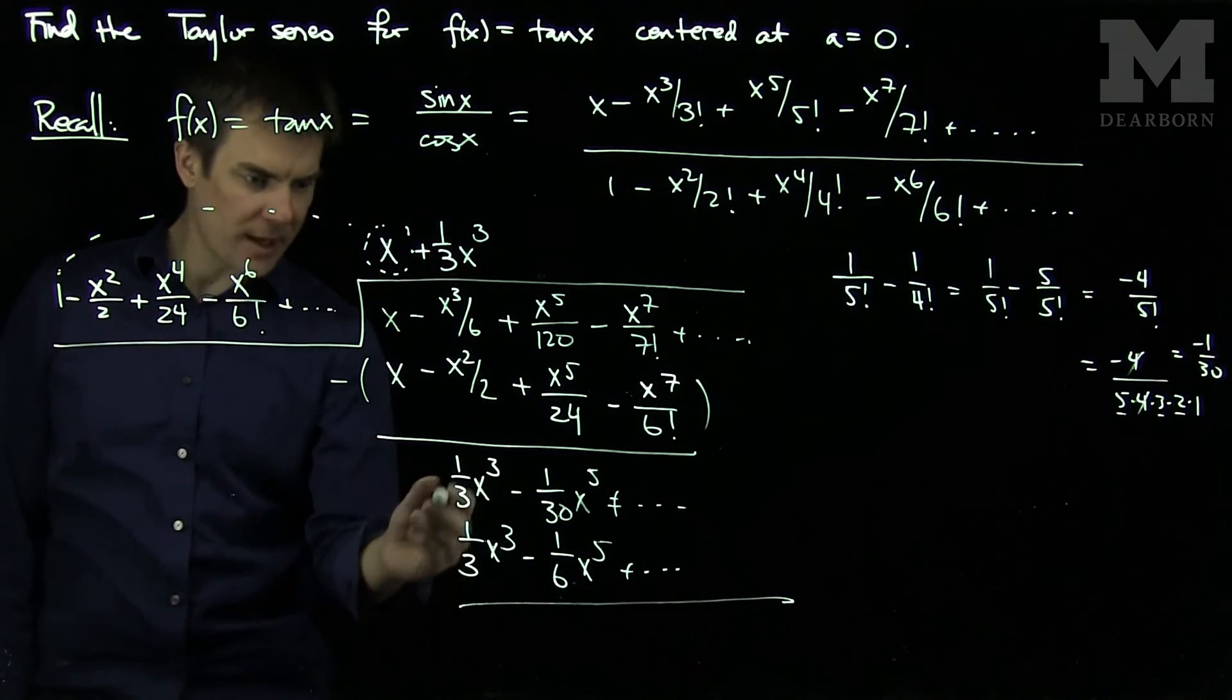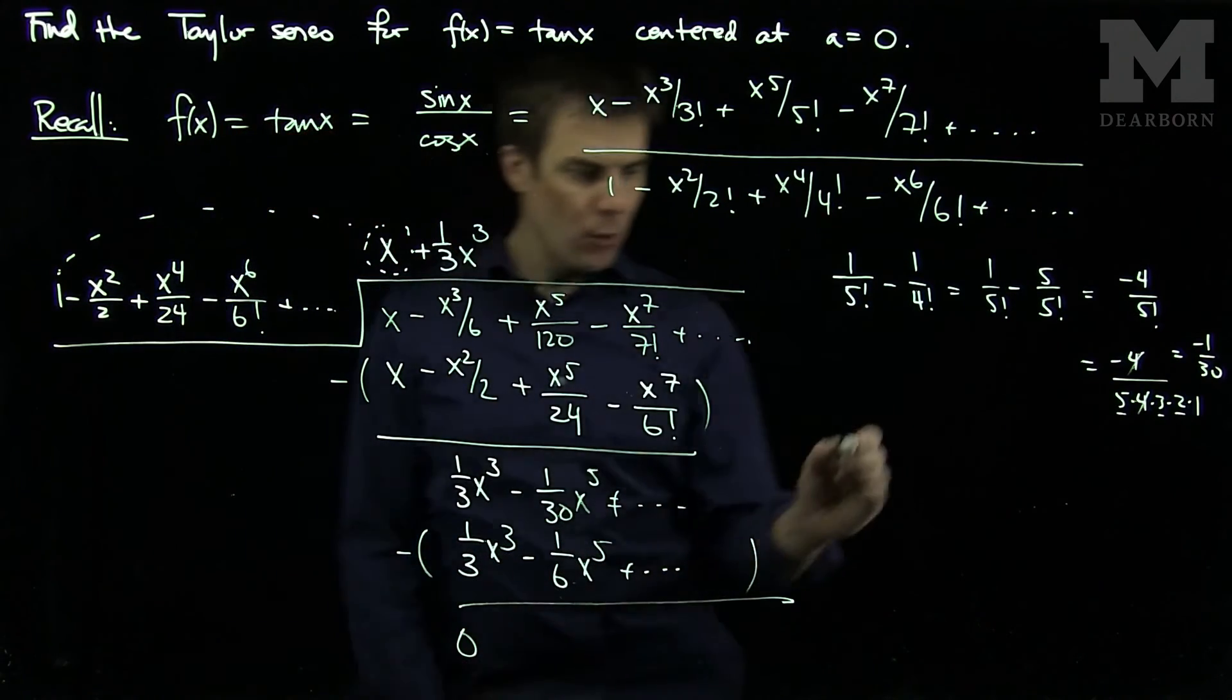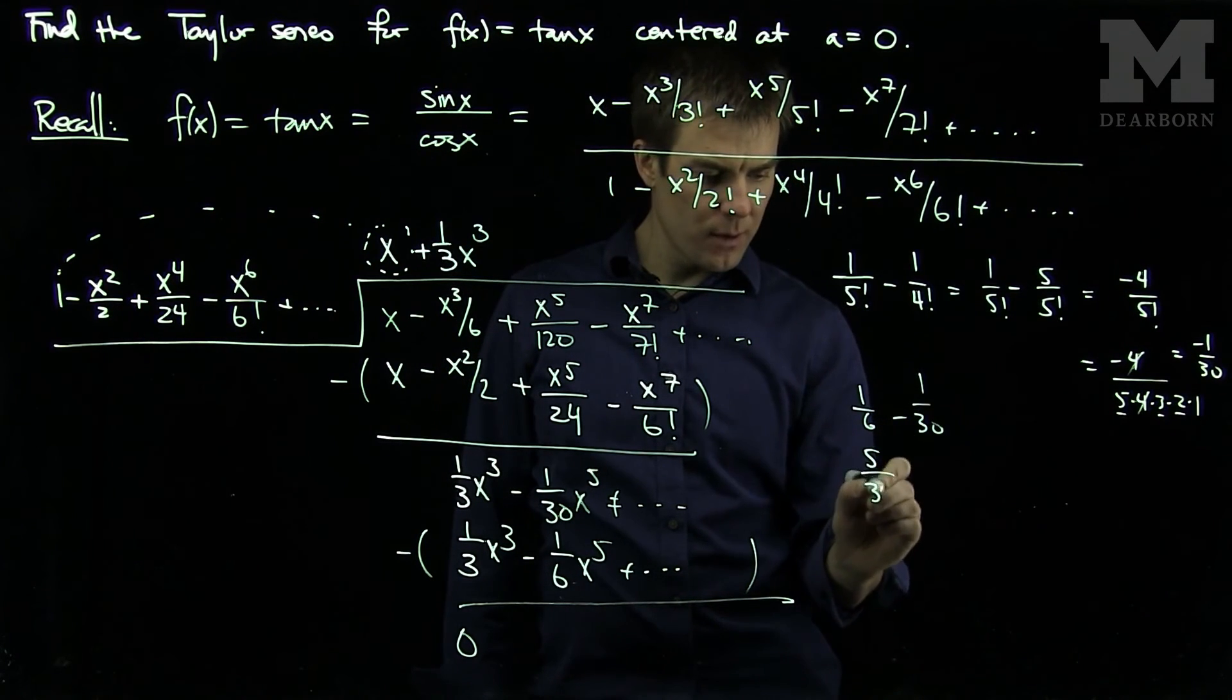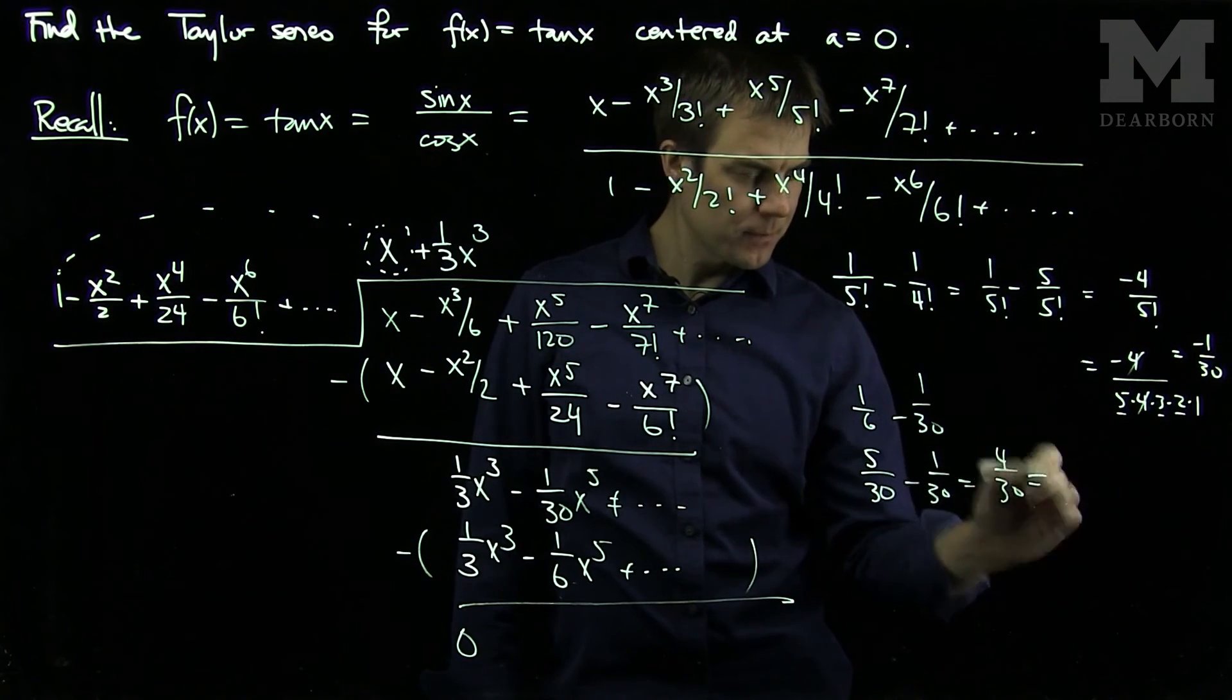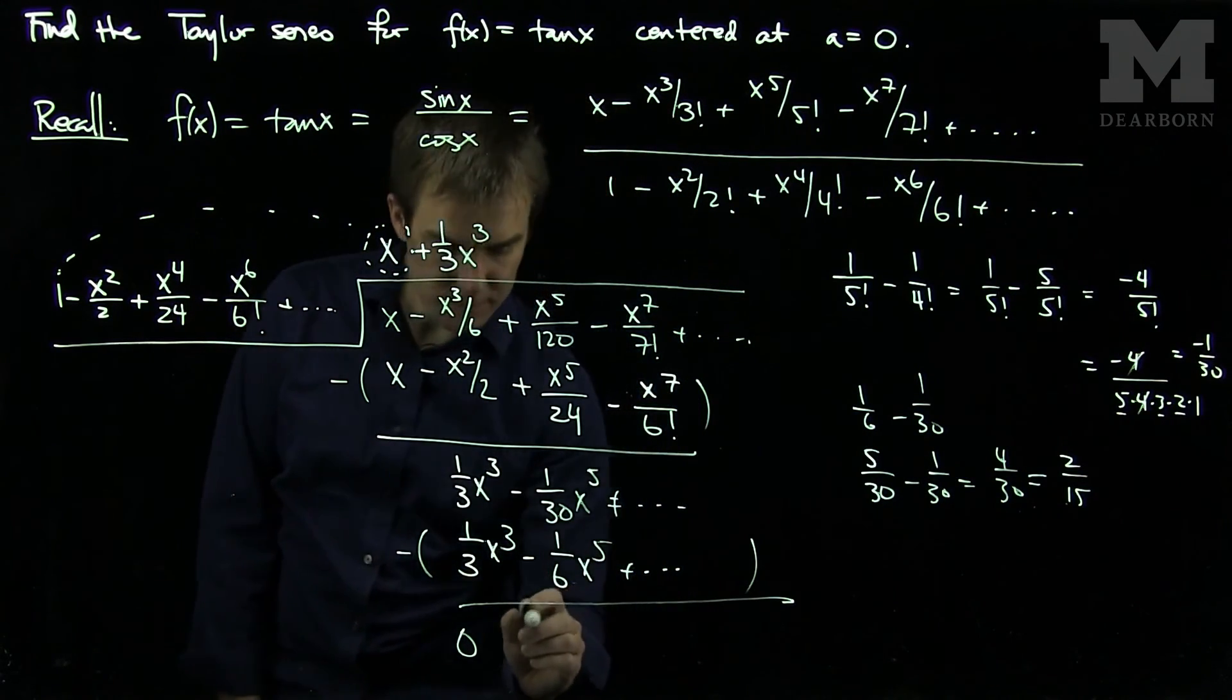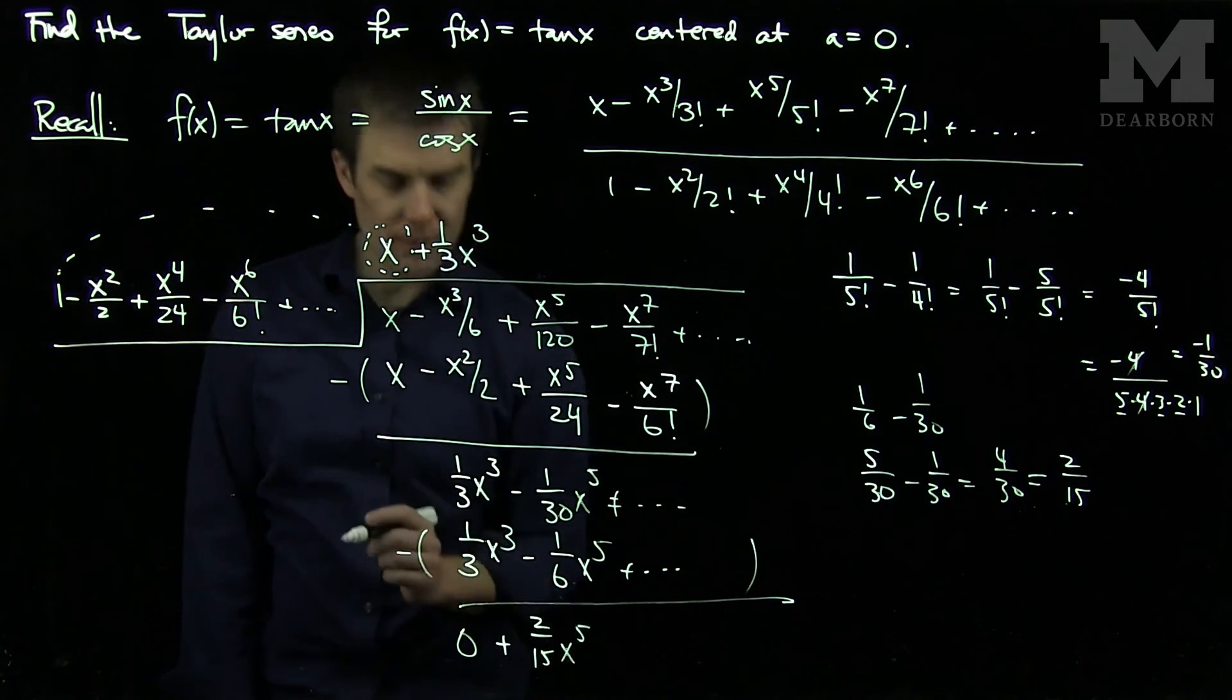And the whole point is when we cancel, when we do the subtraction, we get 0 over here. Then we have 1 sixth minus 1 over 30. And so we can write this as 5 over 30 minus 1 over 30, which is 4 over 30. And that will be 2 over 15. So I'm going to have a positive 2 over 15 x to the 5th power.